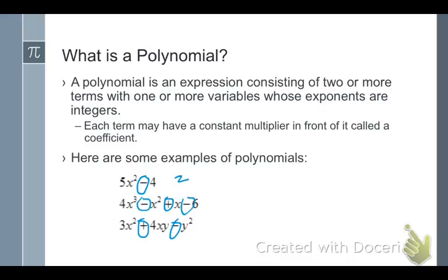There are two terms here. There are one, two, three, four terms here. There are three terms here. So a polynomial has two or more terms, and the exponents are integers. We don't have a half as an exponent. You haven't seen much of that yet, but you will. But to be a polynomial, you have to have an integer exponent.